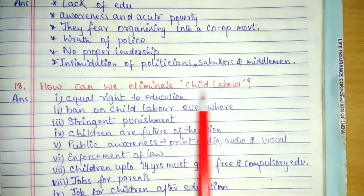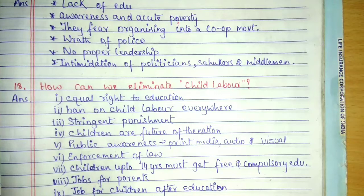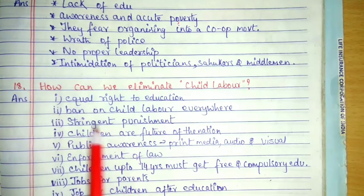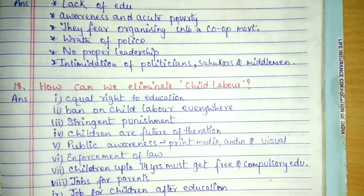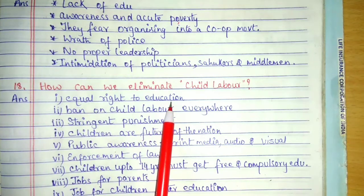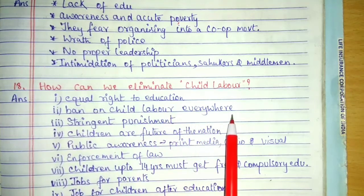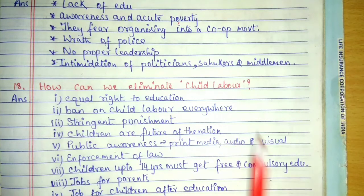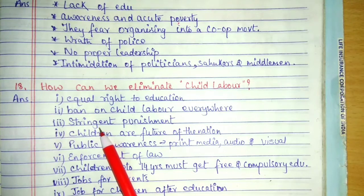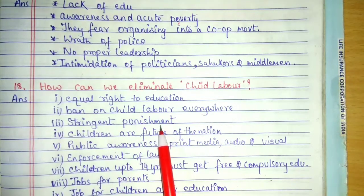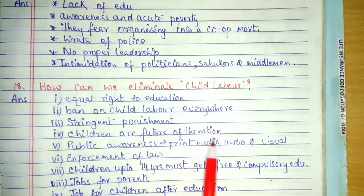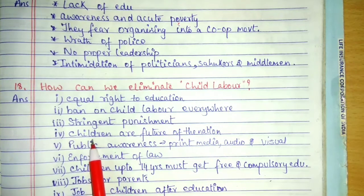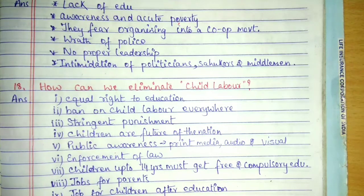How can we eliminate child labor? Equal right to education — everybody should get equal opportunity to learn and become educated. Ban on child labor everywhere — we should announce through all media and means that child labor must stop. Those who practice it should be given stringent punishment by the government and by society. Children are the future of the nation and should be given utmost importance, but we are not doing that, which is why child labor is flourishing.